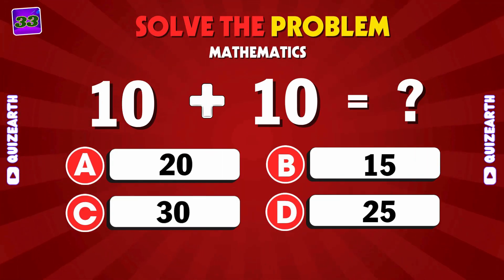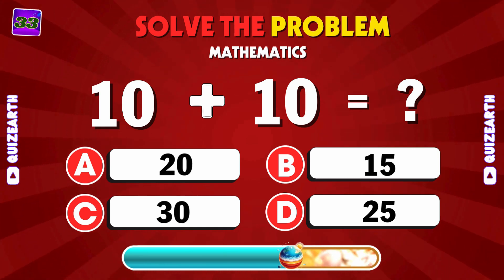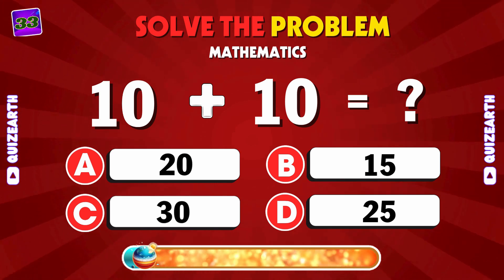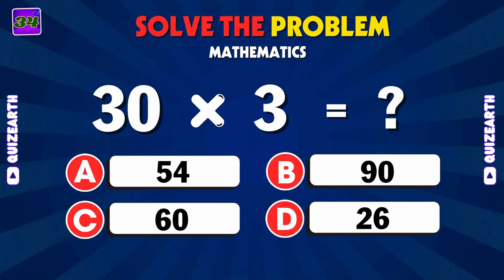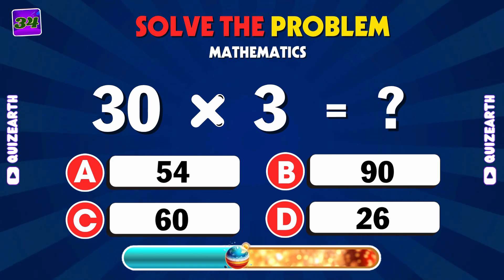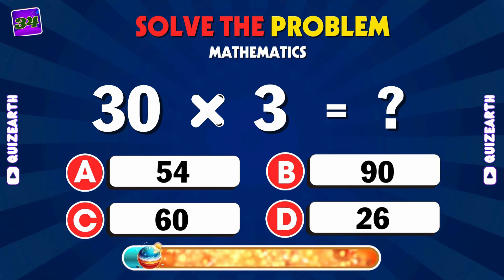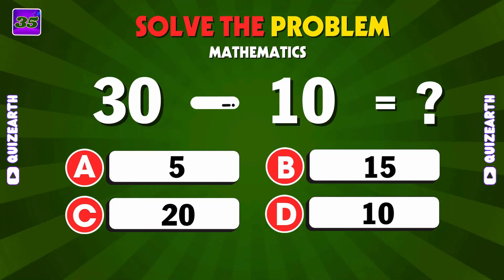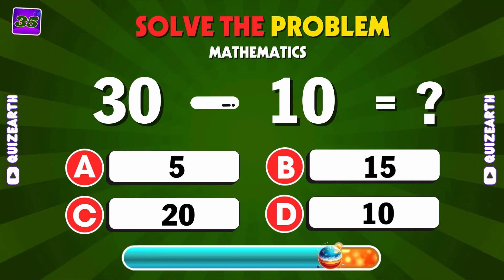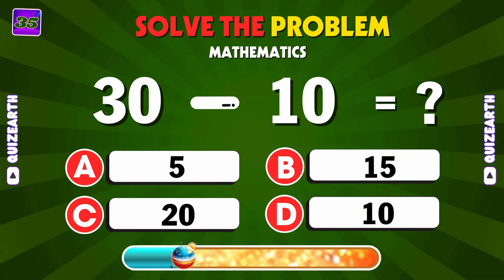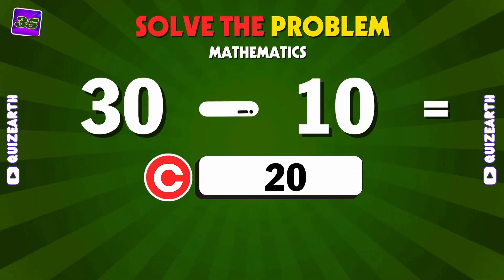Double digits addition — 10 plus 10 equals B: 20. What is 30 minus 10? C: 20.